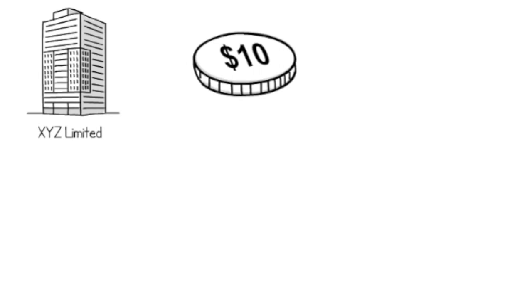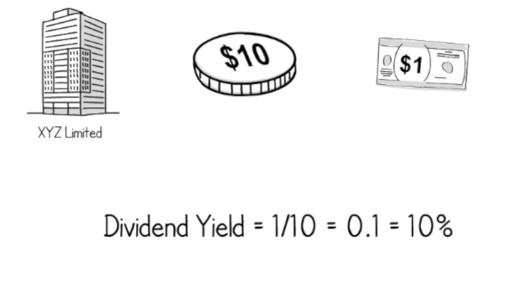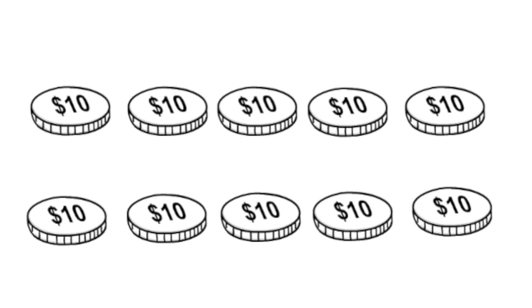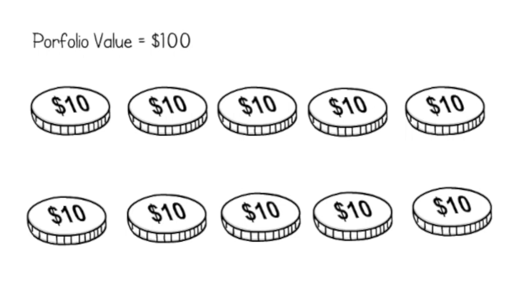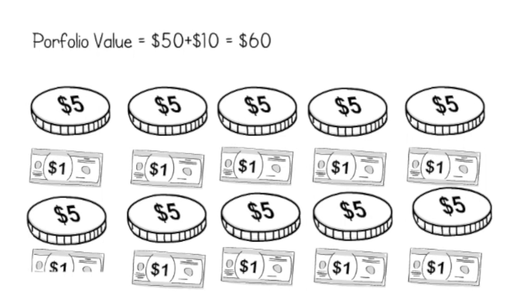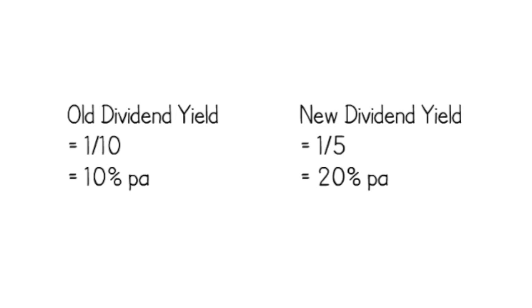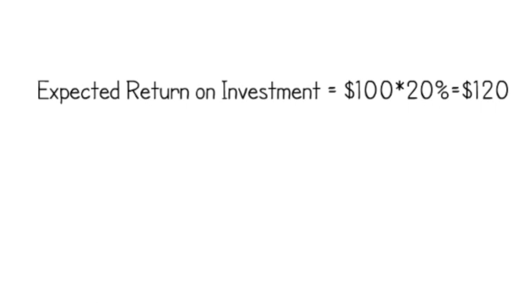For example, consider a company called XYZ Limited. Its share price is $10 per ordinary share, and its recent dividend is $1 per ordinary share, making its dividend yield 10% per annum. Say you buy 10 shares, so your portfolio is valued at $100. By the end of the financial year, the business pays the same dividend of $1, but its share price has depreciated to $5 per share. While the dividend yield has increased to 20% per annum, so your portfolio should increase by 20%, from $100 to $120.